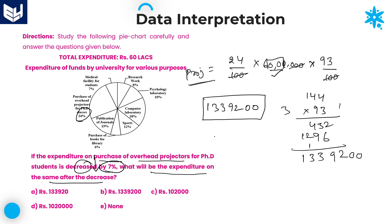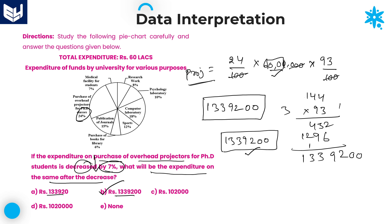Looking at the options: two options start with 1,33,92 — option A and option B — differing only in number of zeros. We calculated two zeros remain at the end, giving 13,39,200. Be careful about the number of zeros; small errors in zeros can cause mistakes. The answer is 13,39,200, which is option B. Option B is the right answer.